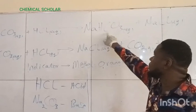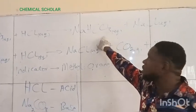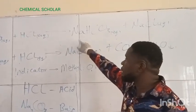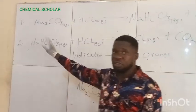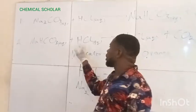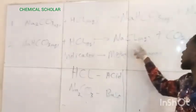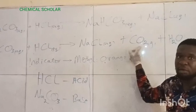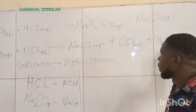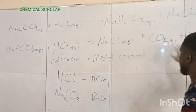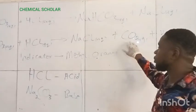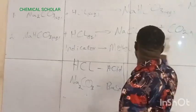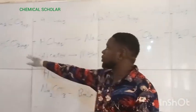So you see, this sodium hydrogen carbonate — in the second stage with HCl — gives you sodium chloride and carbon dioxide (CO₂) with water. So you now have the salt, water, and carbon dioxide, because you have the carbonate here.